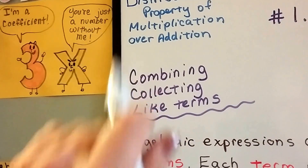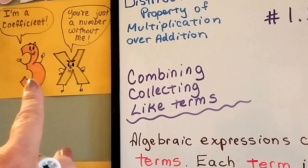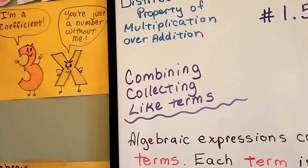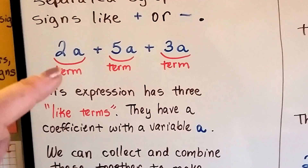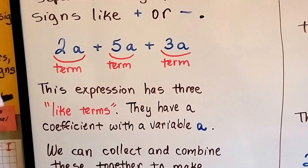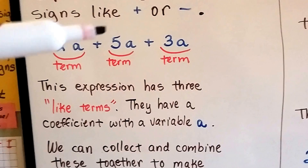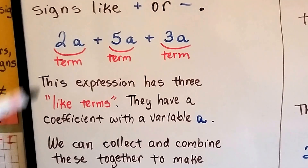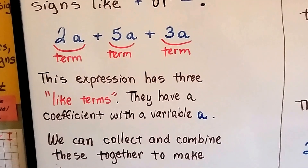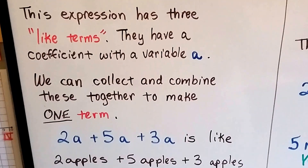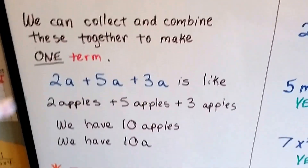If that variable goes away, the coefficient is just a plain old number — nothing special. As long as that variable's there, he's a coefficient. So we've got three terms that are alike — they're like terms — and they have a coefficient with a variable a. They're all the same, they're all alike, and we can collect and combine these together to make one term.